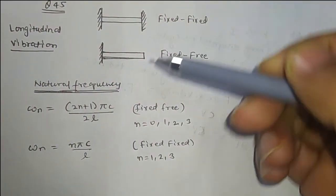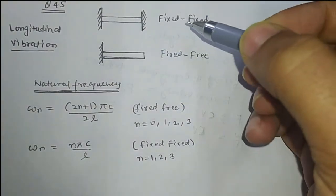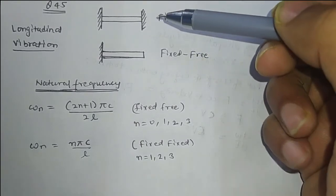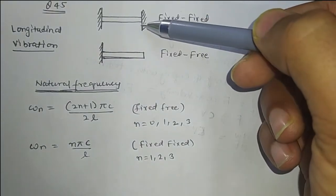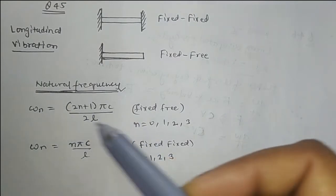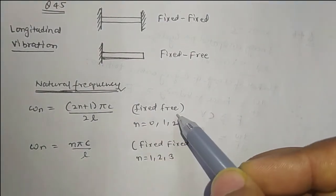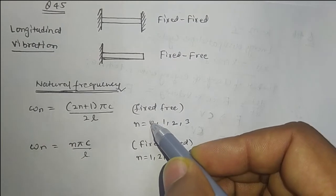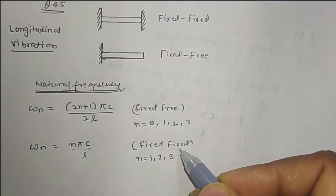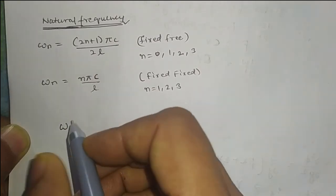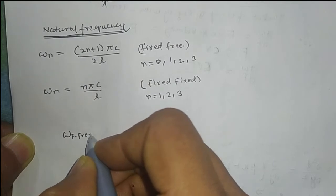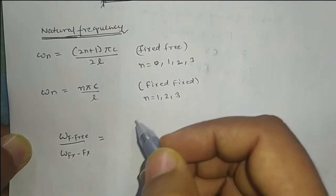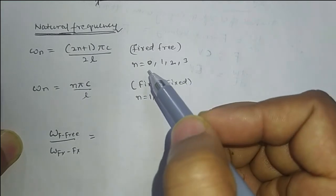Question number 45: Based on longitudinal vibration, we need to find by what factor the natural frequency changes when the boundary condition is changed from fixed-fixed to fixed-free. Using the natural frequency formula for fixed-free end and fixed-fixed end: for the fundamental frequency, n = 0 for fixed-free and n = 1 for fixed-fixed. We divide the fixed-free frequency by the fixed-fixed frequency.